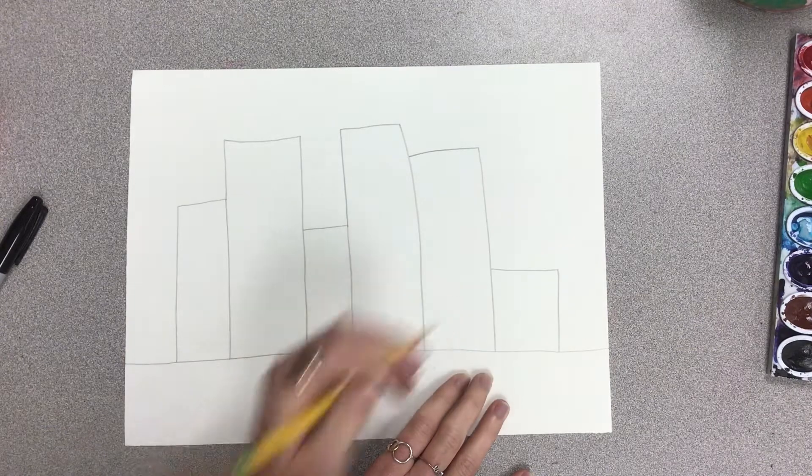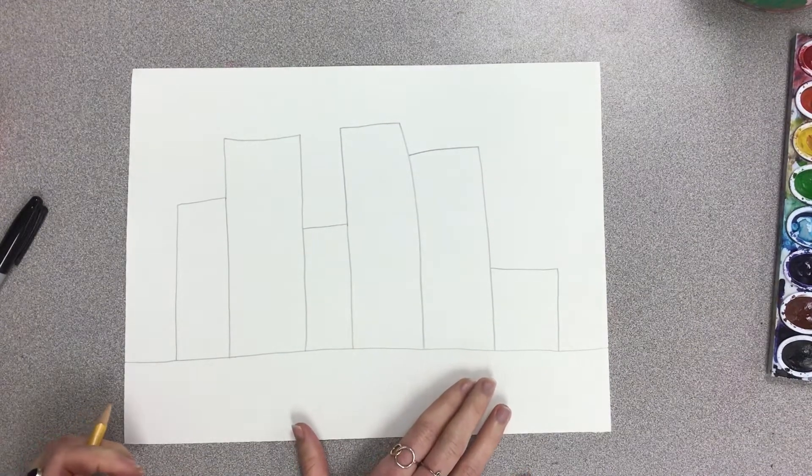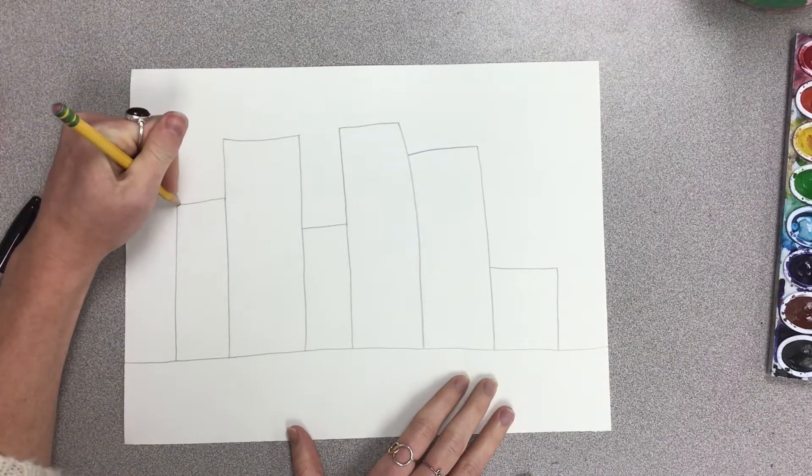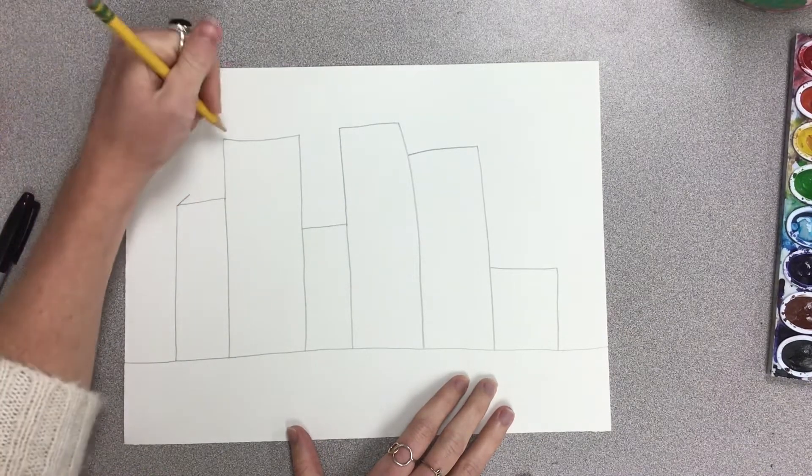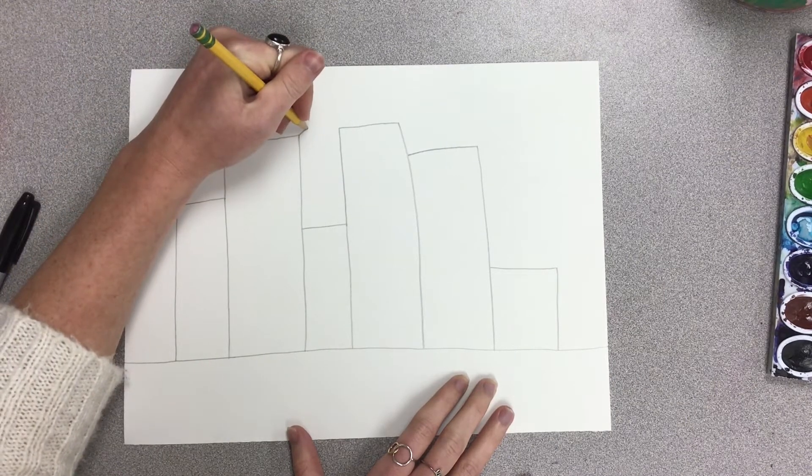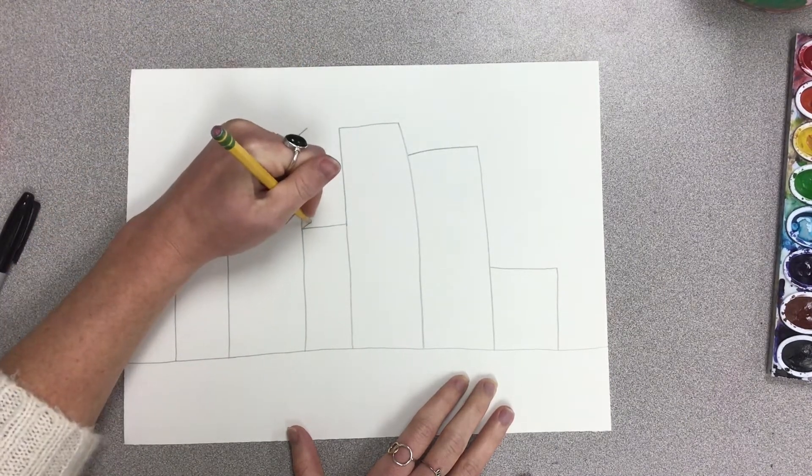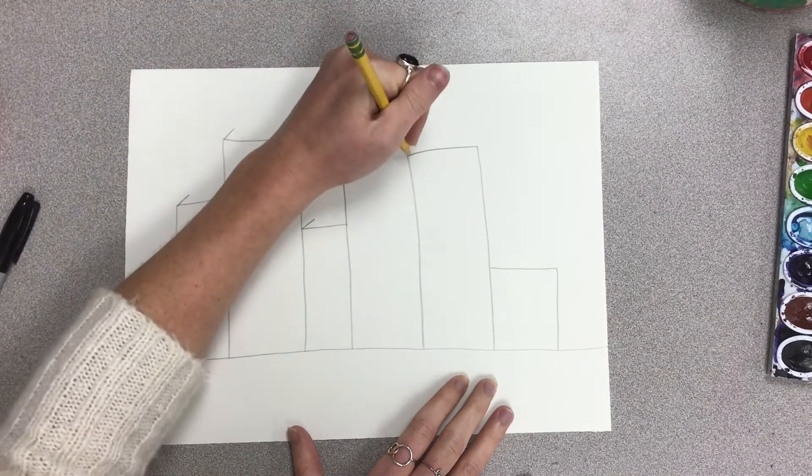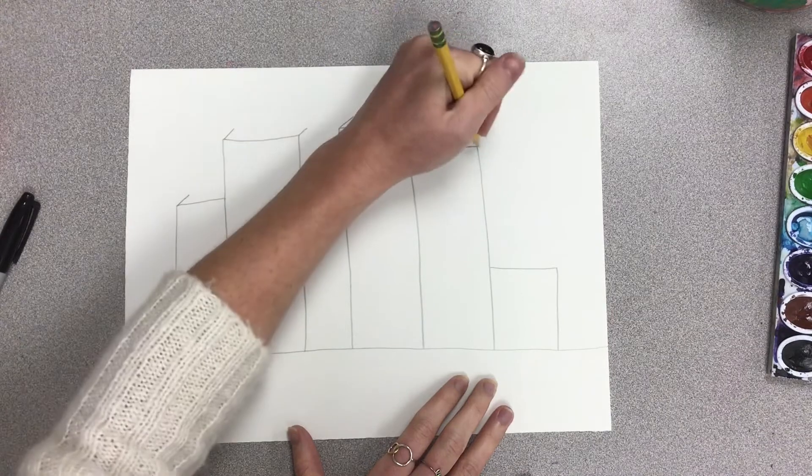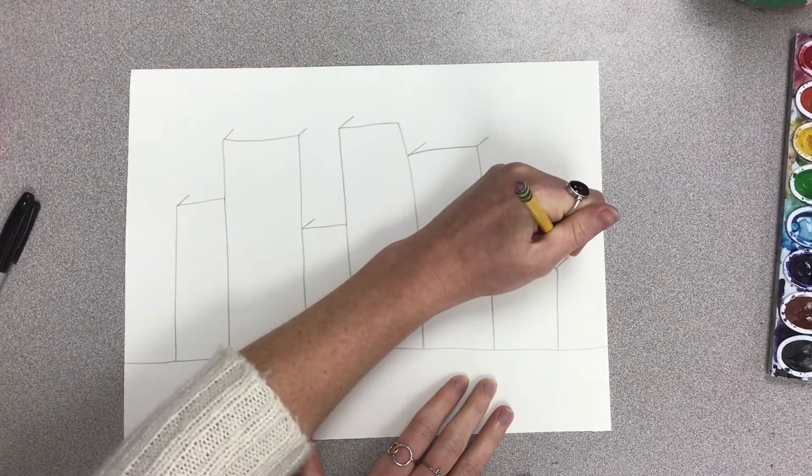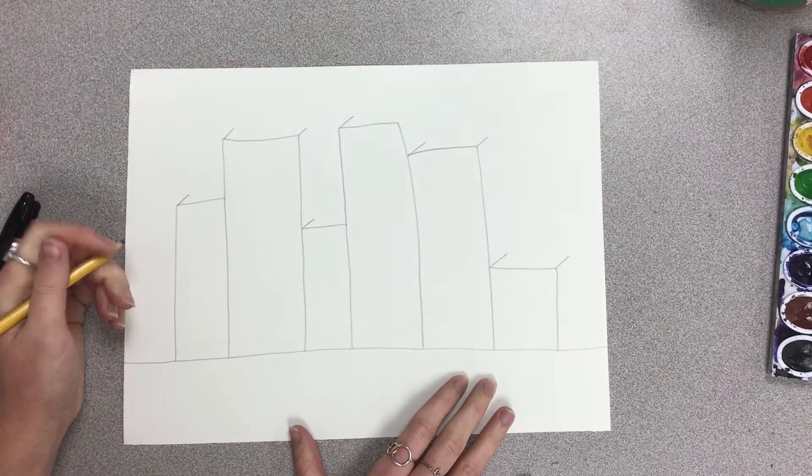To start, next I'm going to draw a diagonal line that goes from the top of the corner of the building and it has to go the same direction. So if I go from the left to the right, then all the diagonal lines must be left to right diagonally.